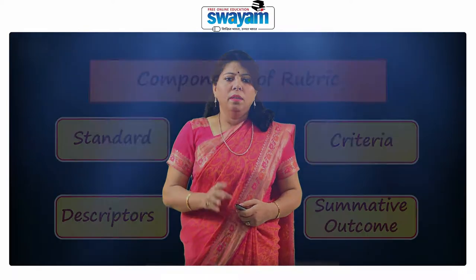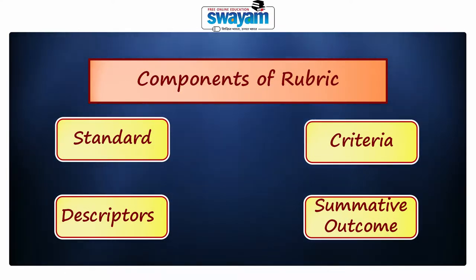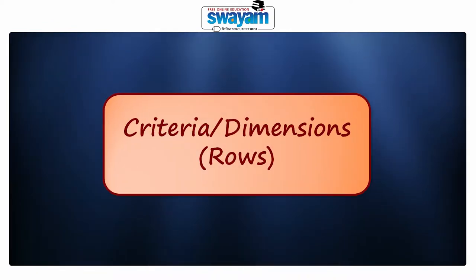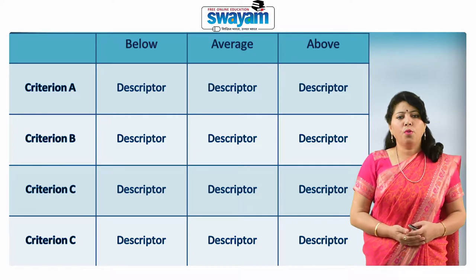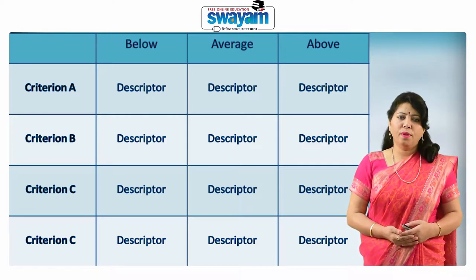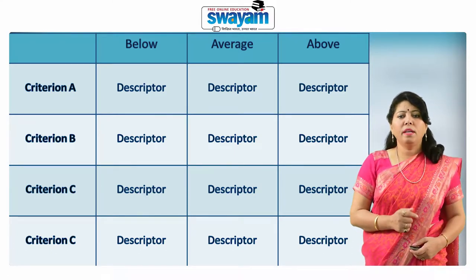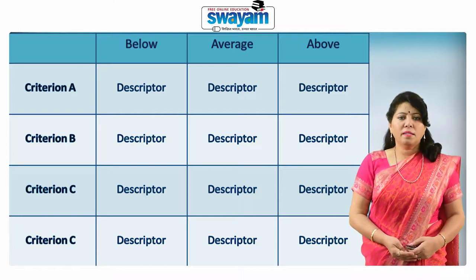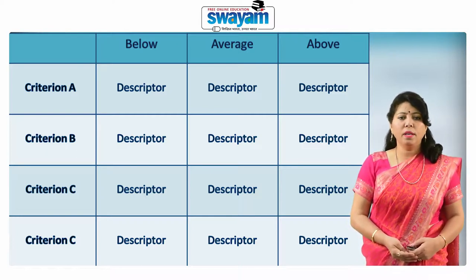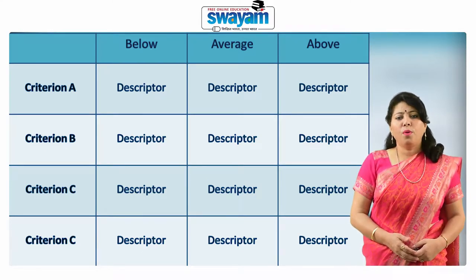There are four basic components of an assessment rubric: standard, criteria, descriptors, and summative outcome. The rows of the rubric are referred to as criteria, but may also be referred to as dimensions. Criteria are the properties or characteristics on which the assessment task is going to be judged. Each criterion describes an element critical to success on the assignment and characterizes good performance of the task — the skill, knowledge, and other aspects.